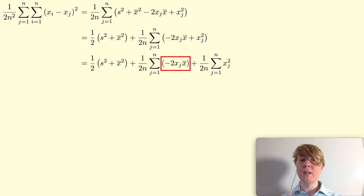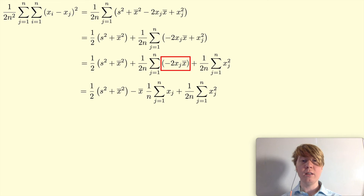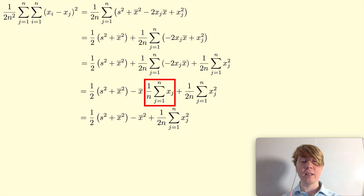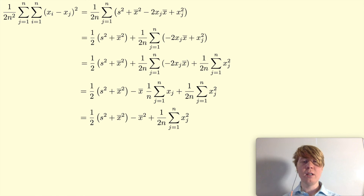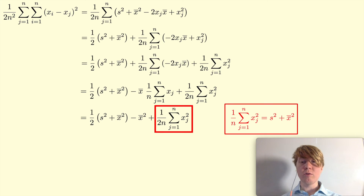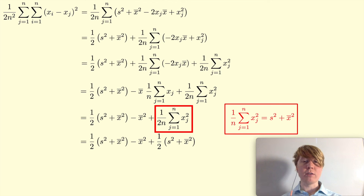For the first of these two sums, you'll spot that minus 2·x-bar doesn't depend on j, so you can take that out as a factor — the 2 cancels with the half outside — and you're left with minus x-bar times 1 over n times the sum of xj. That inner sum is just x-bar again, so you get a negative x-bar squared term. Really nice. Then for the last sum, we recognize 1 over n times the sum of xj squared and replace it by s² plus x-bar squared, remembering to keep the factor of a half outside.